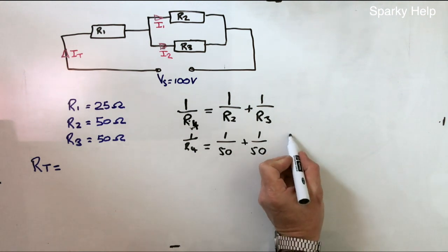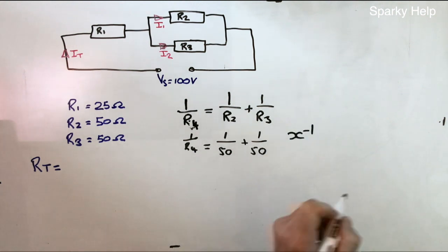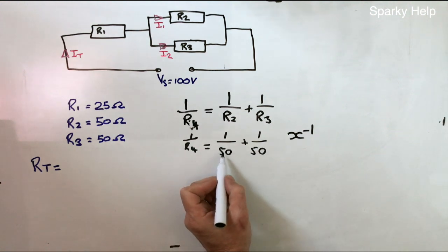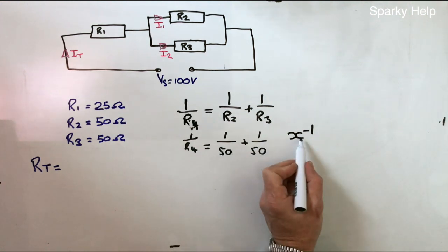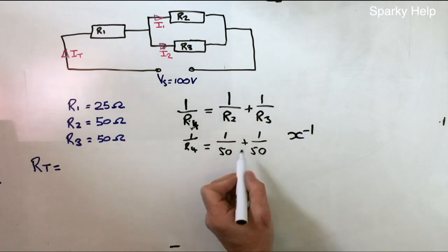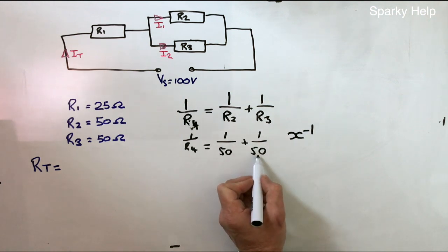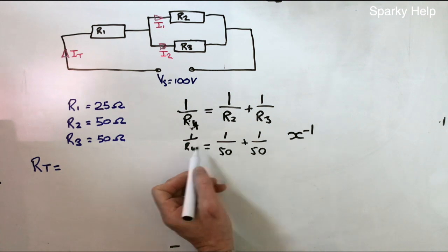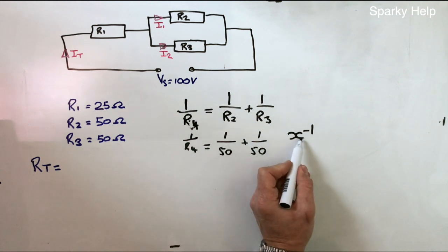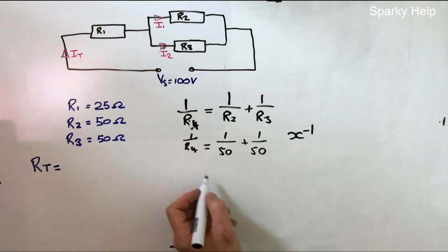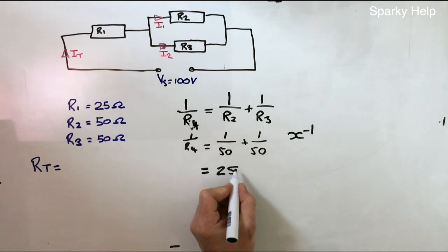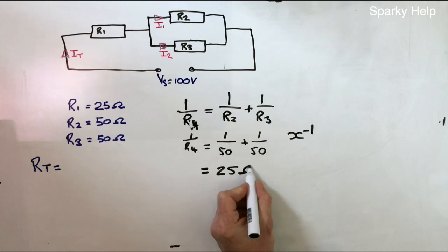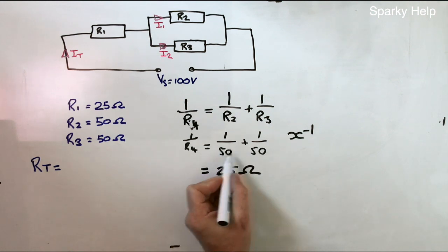The button we press on our calculator is the x to the minus 1. So, what you want to do is, on your calculator, press in 50, press the x to the minus 1 button, and you press plus, 50, x to the minus 1, equals, and then x to the minus 1 again, to give you the correct answer. And if you do all of that, it will come to, some of you probably already noticed, it should come to 25 ohms.